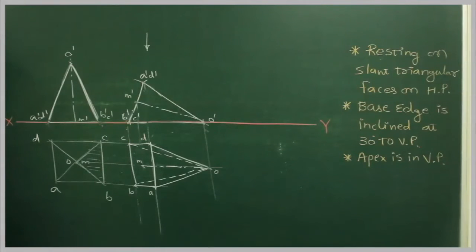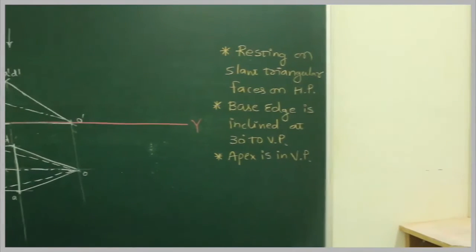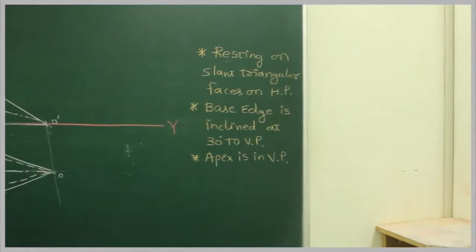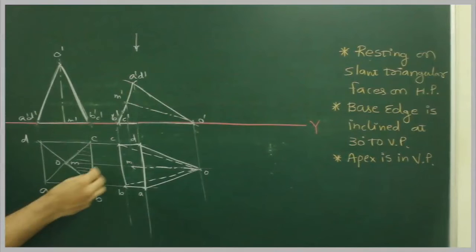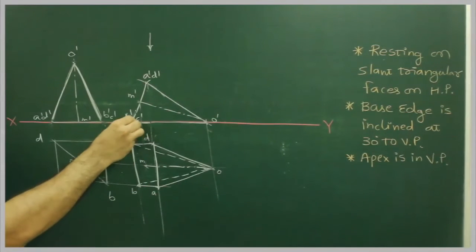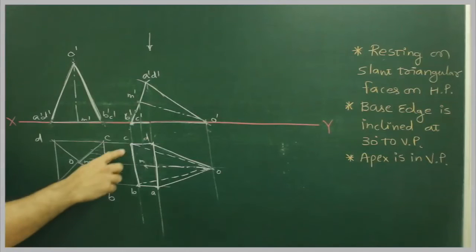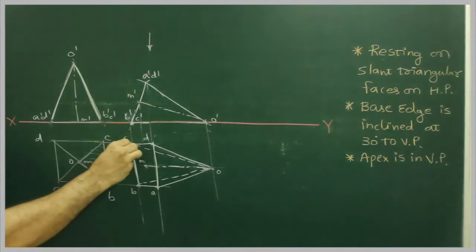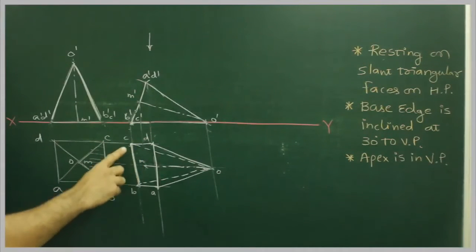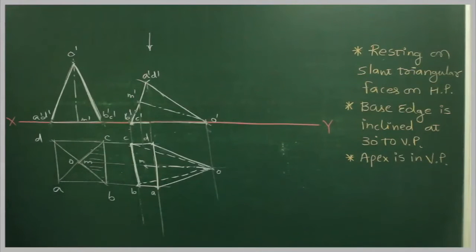Now if you see the question that mentioned, base edge is inclined at 30 degree to VP. Now which one is the base edge? In this case, if you see the resting edge, which is on XY line, B'C' is the resting edge. This is the base edge. This is inclined at 30 degree to VP. So that we can do.